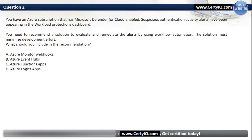Question 2. You have an Azure subscription that has Microsoft Defender for Cloud enabled. Suspicious Authentication Activity Alerts have been appearing in the Workload Protections Dashboard. You need to recommend a solution to evaluate and remediate the alerts by using workflow automation. The solution must minimize development effort. What should you include in the recommendation? Options are: A. Azure Monitor Webhooks, B. Azure Event Hubs, C. Azure Function Apps, D. Azure Logic Apps.